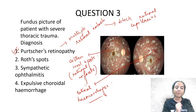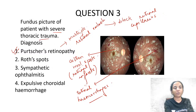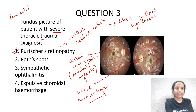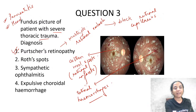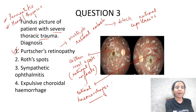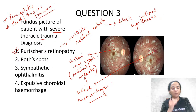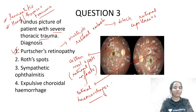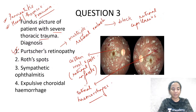Purtscher's retinopathy is typically described in patients of pancreatitis and also in patients with severe head and thoracic trauma. So the retina is full of infarcts (cotton wool spots) and hemorrhages, and this is classically seen in these conditions.